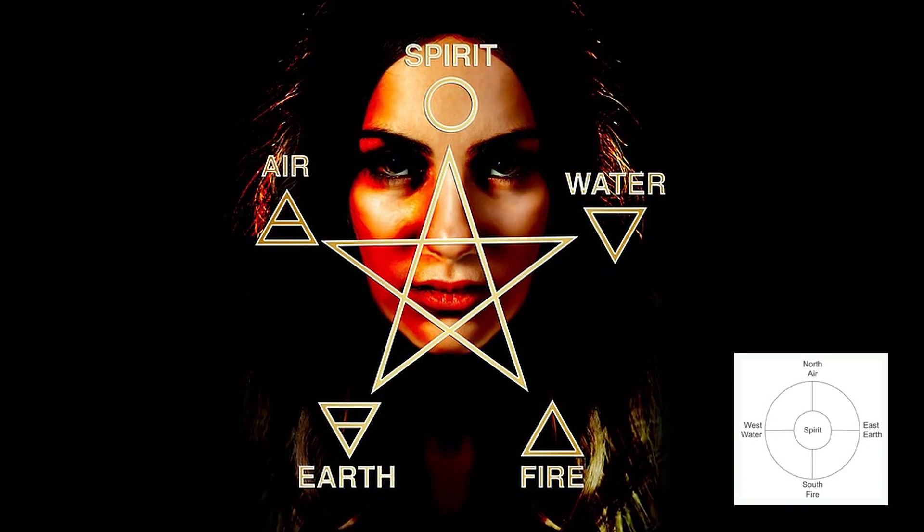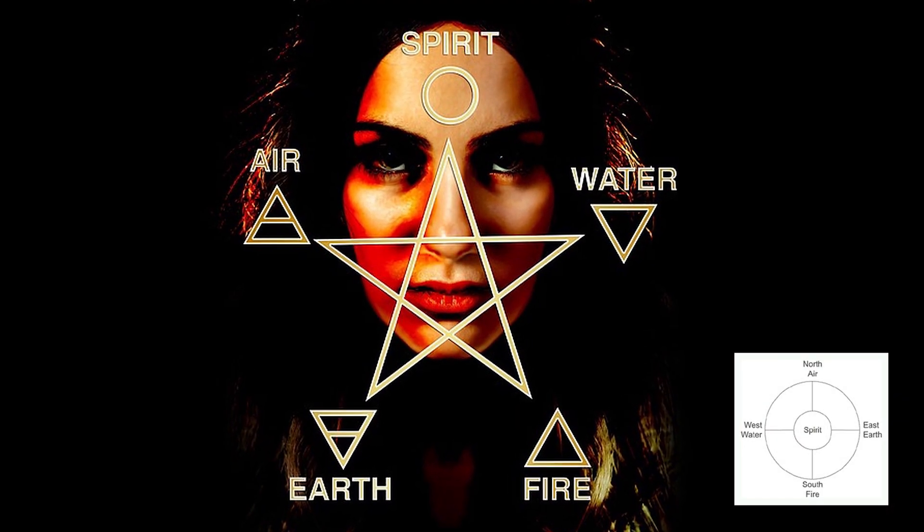The four quarters is a concept used in various systems of the esoteric and the occult, and these four quarters are associated with the classical elements: earth, air, fire, and water. Have you ever wondered why, for instance, north is earth and east is air? Well today I'm going to look into exactly why the elements are associated the way they are.